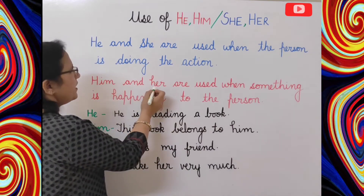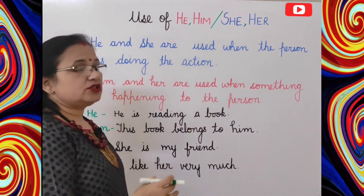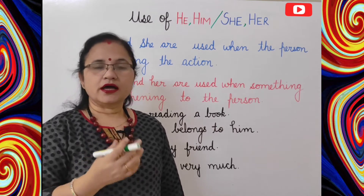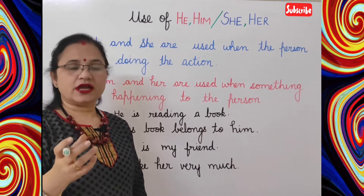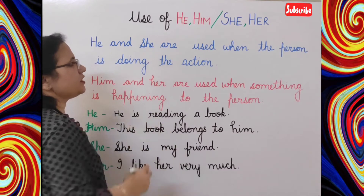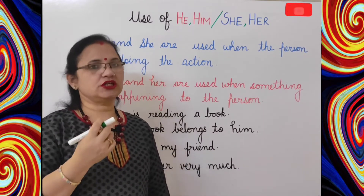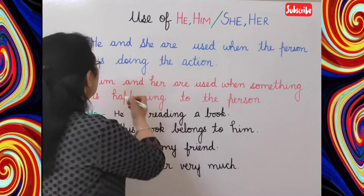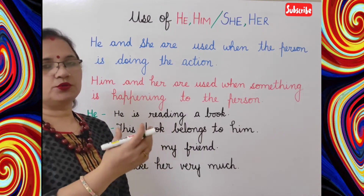Now him and her are used when something is happening to the person — jab kisi vyakti ke saath kuch ho raha hai, tab hum her or him ka use karte hai. You should always keep in mind that he and she are used before the verb in the sentence, aur him or her ka use hamesha sentence mein verb ke baad hota hai.